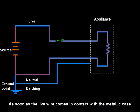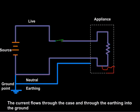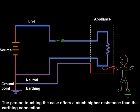Now if there is a fault in the appliance, the electric current flows from the metallic body into the ground or earth. This prevents electric shock.